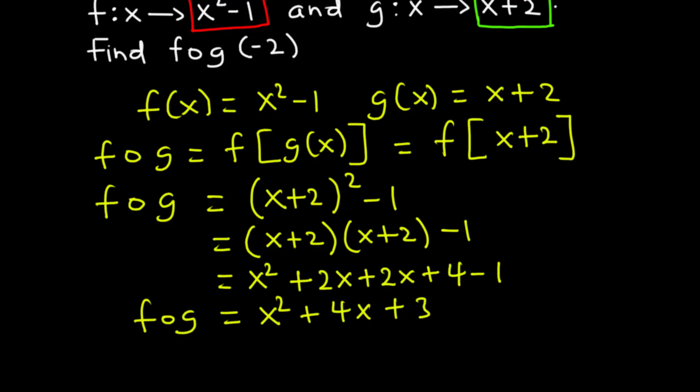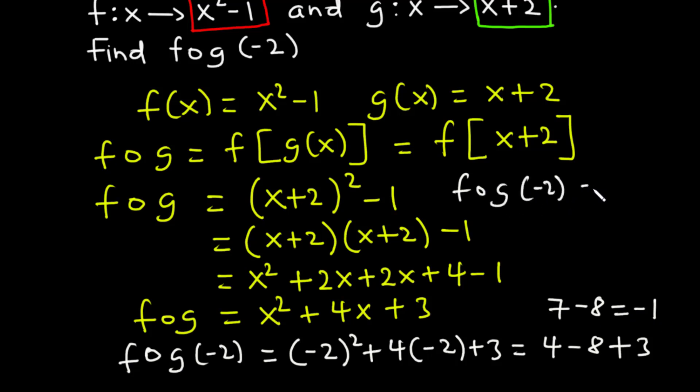Don't forget we are asked to find f∘g(-2). We replace x with -2: (-2)² + 4(-2) + 3. -2 squared is 4. 4 times -2 is -8. Then plus 3. 4 plus 3 is 7, and 7 minus 8 equals -1. Therefore, f∘g(-2) = -1.